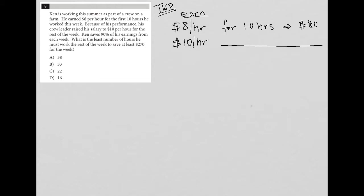Then the next sentence says Ken saves 90% of his earnings from each week. So I'm going to make another category down here and say, if the top category was for earnings, this is going to be for saving.